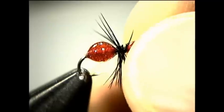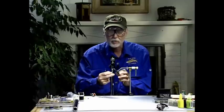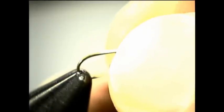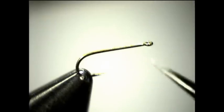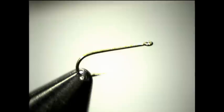It's tied on a size 16 Tiemco 101 hook. You can tie them smaller if you want to, but I found that the size 16 is the best all around to do this fly with. It's important that they use the 101 instead of the standard down eye dry fly hook. If you notice, this hook is what they call a ring eye. The eye is straight out instead of turned down. It's much easier to work with epoxy on this size fly if you use this particular hook.